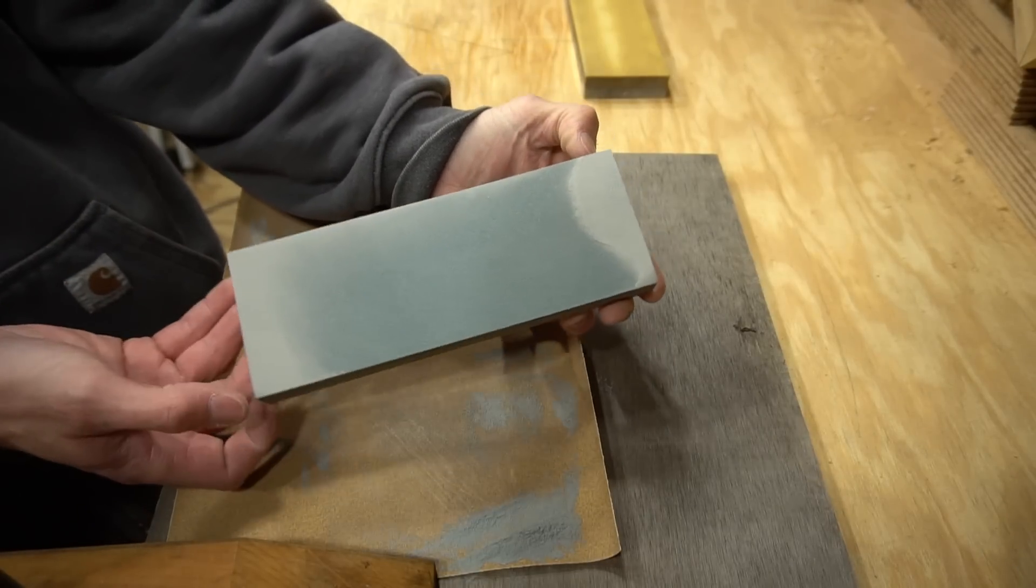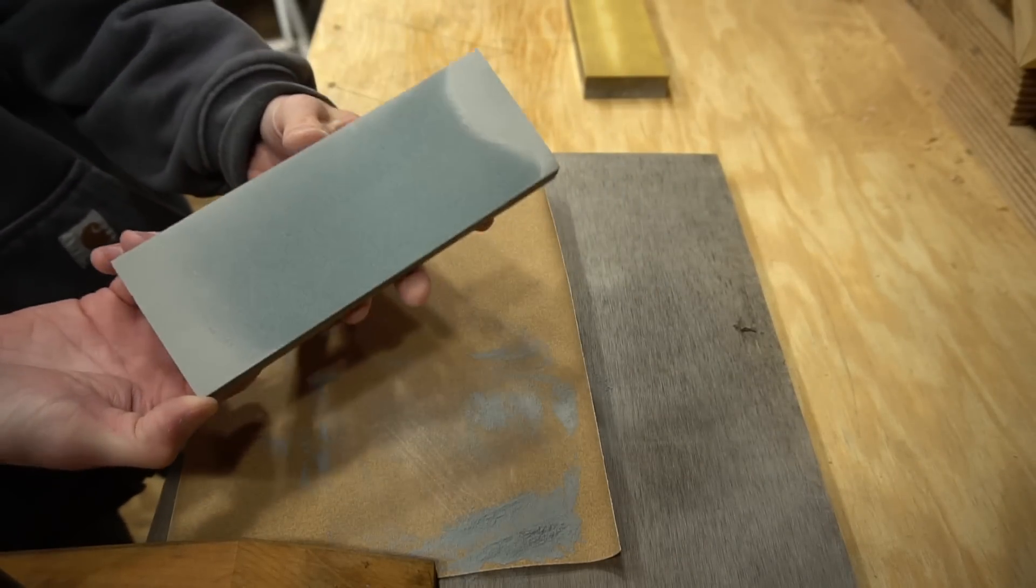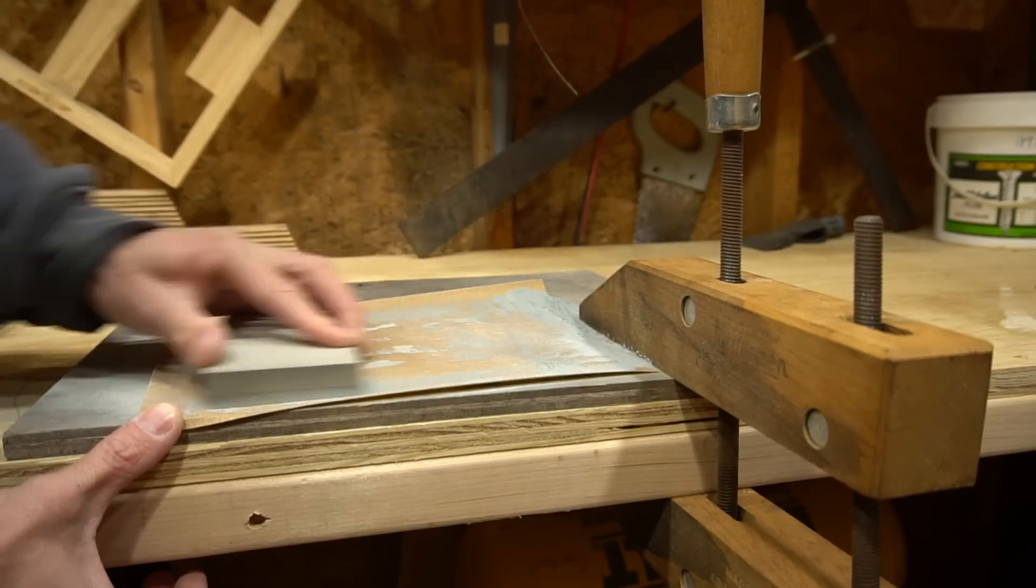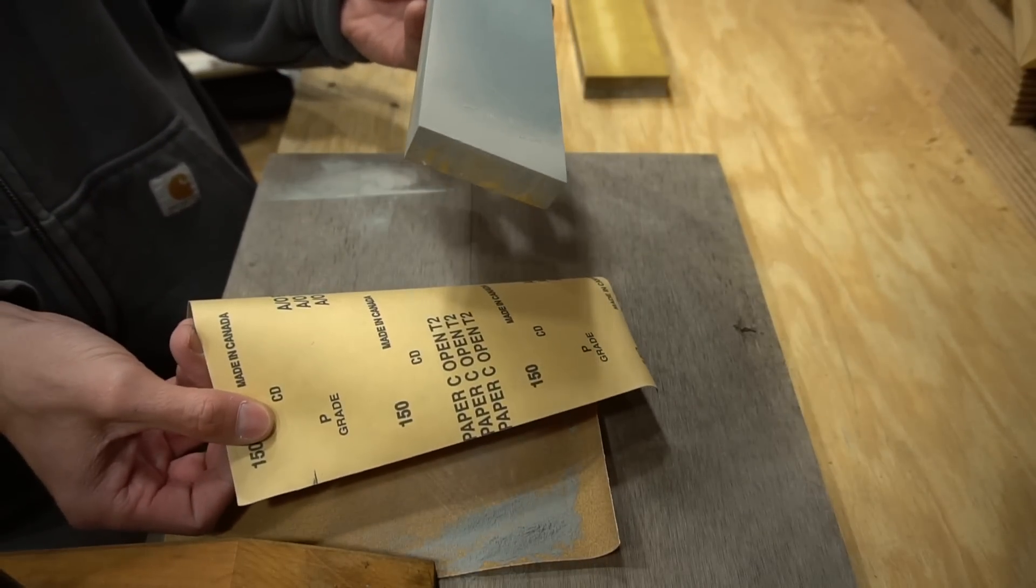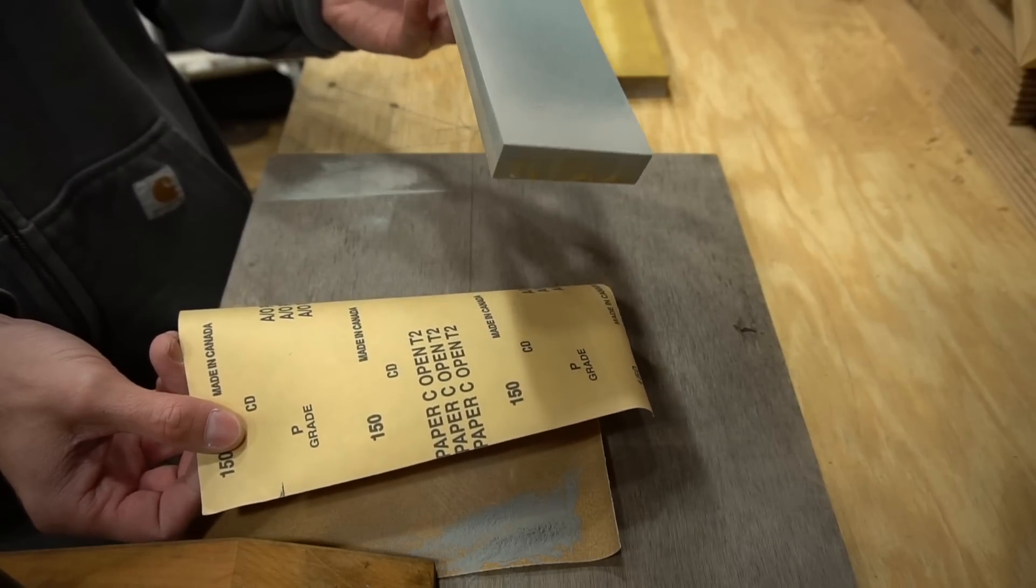So after just a couple seconds you can see how far along we are. We're still working those high spots down. This shouldn't take too long. If you find it's taking too long, use a little bit coarser grit sandpaper. I'm using 150 grit. Honestly it can be probably even coarser than 150 grit.